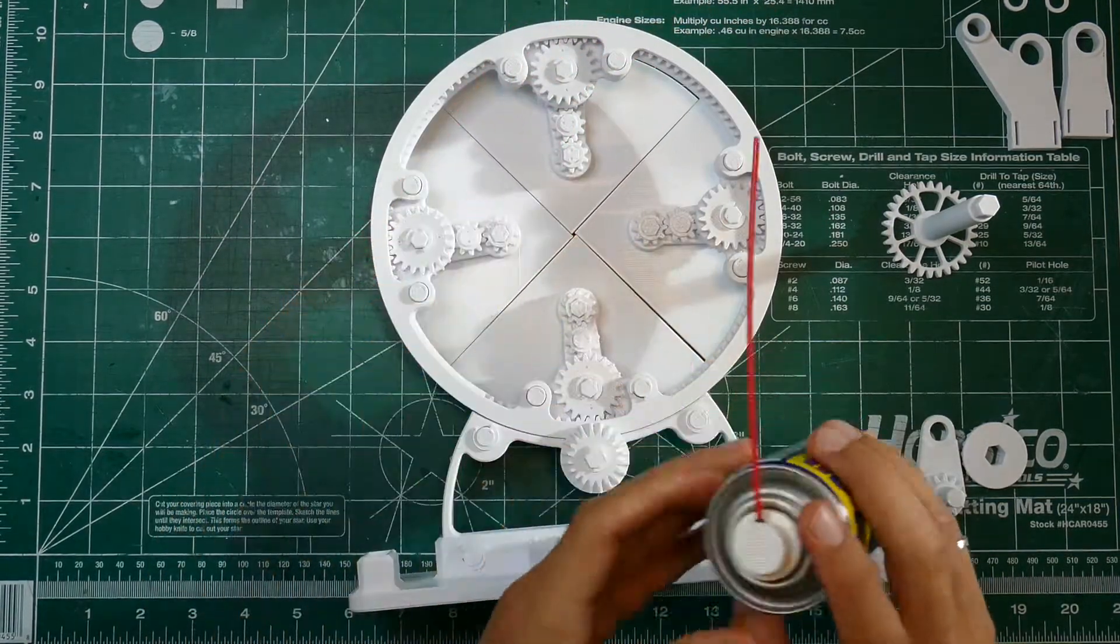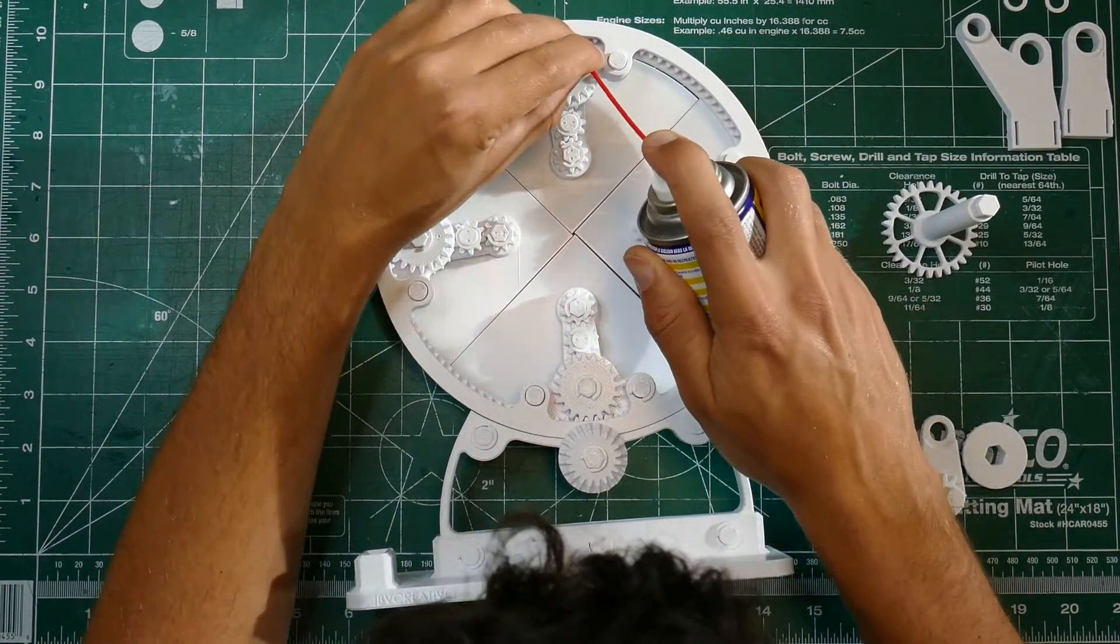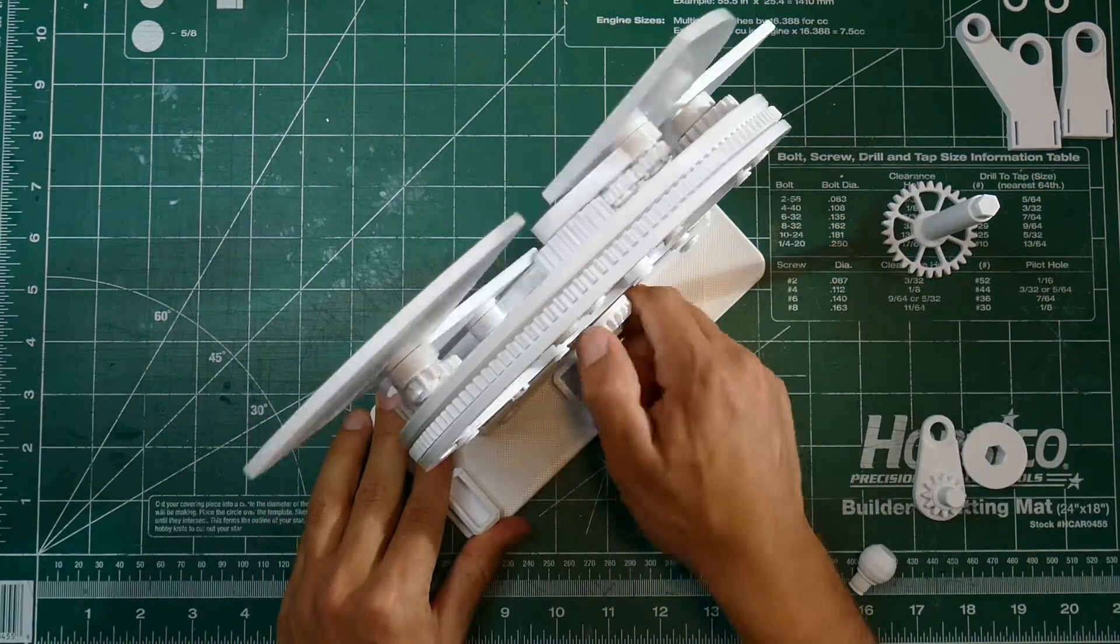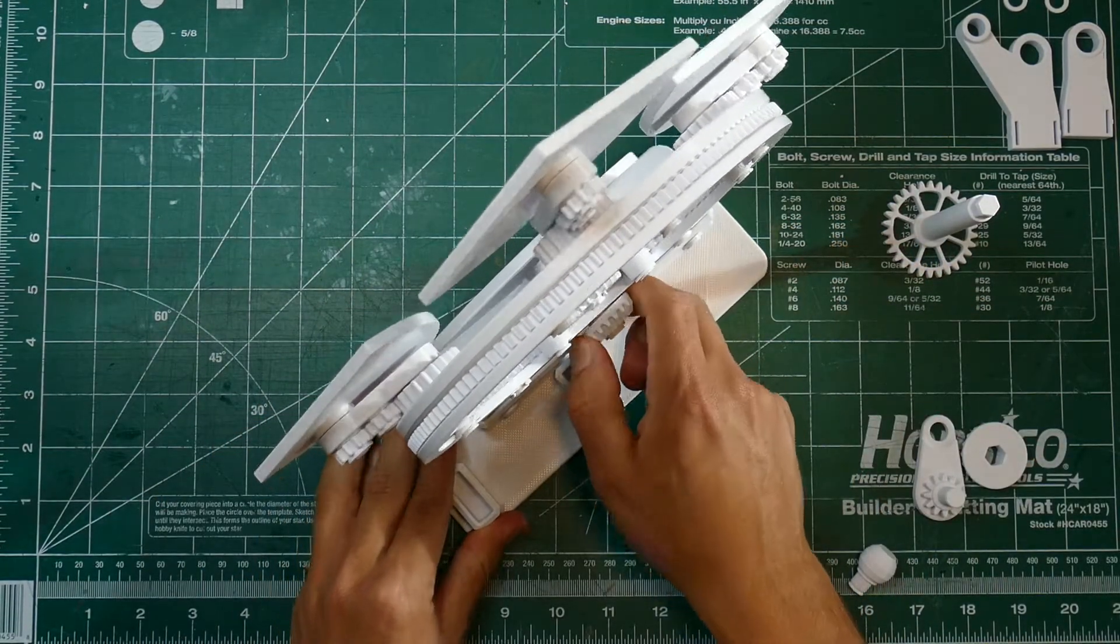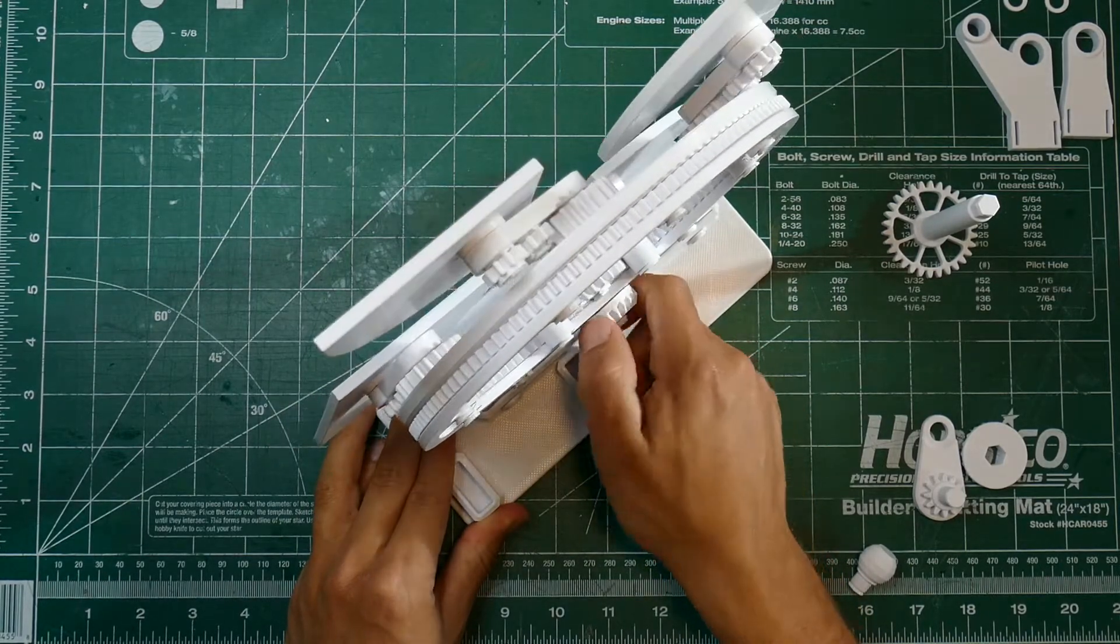Remember WD-40 helps a lot here. This might be a good step to just douse it. Get in between the gears, get in the shafts, get it into the outer ring and then keep spinning it and get the WD-40 to work its way into all of the joints.